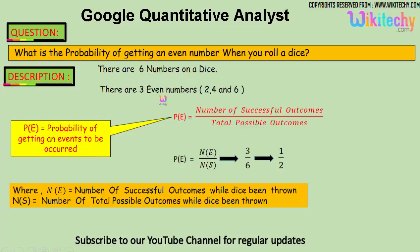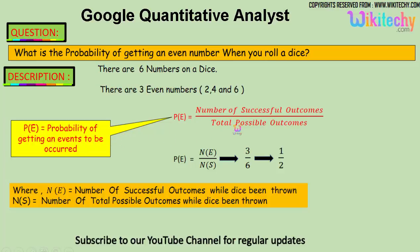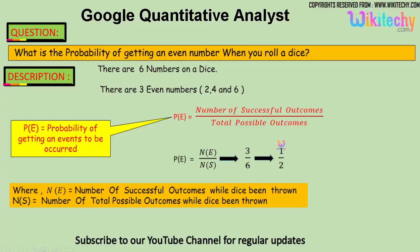We got three even numbers: two, four, and six. Here is the formula — probability of getting an event is the number of successful outcomes divided by the total possible outcomes. So three is the number of successful outcomes, divided by the total possible outcomes which is six, so three by six.